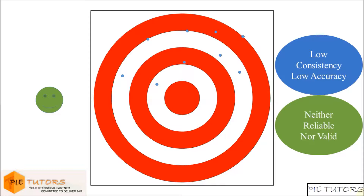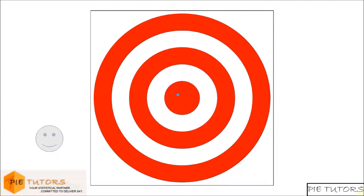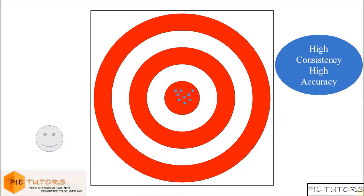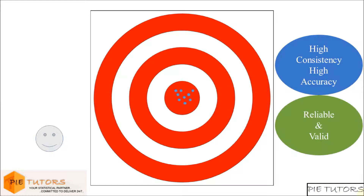The fourth person fires all his bullets and it is observed that all his bullets hit exactly at the center. We can see that the firing consistency and the firing accuracy for this person are high. This scenario is analogous to a valid and reliable measure.